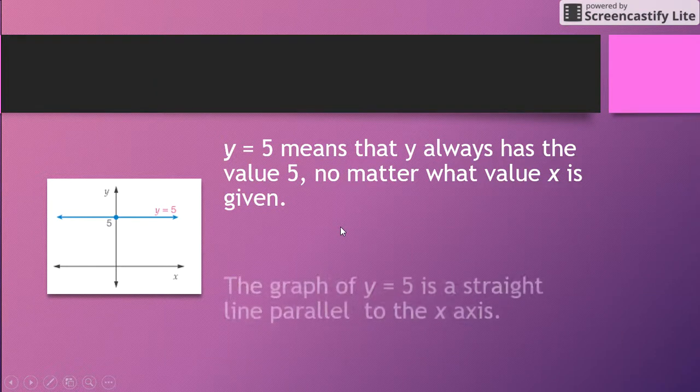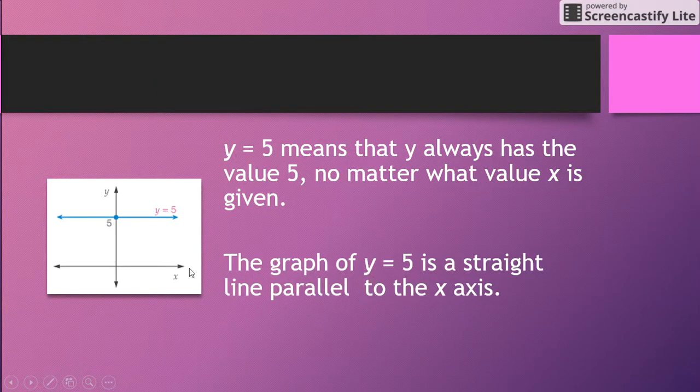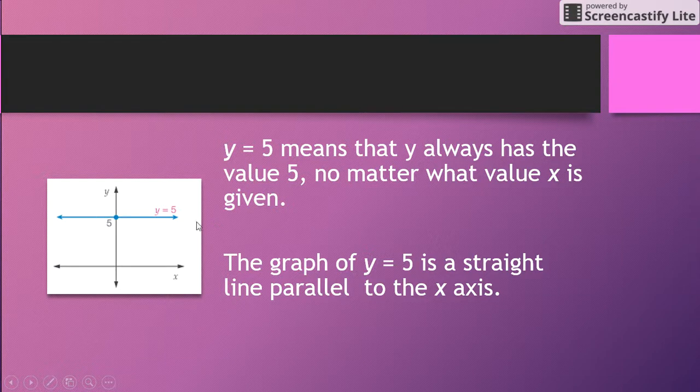it will always be along this line. So the graph of y = 5 is a straight line which is parallel to the x-axis. It goes through that point, y equals 5, in a straight line parallel to the axis.